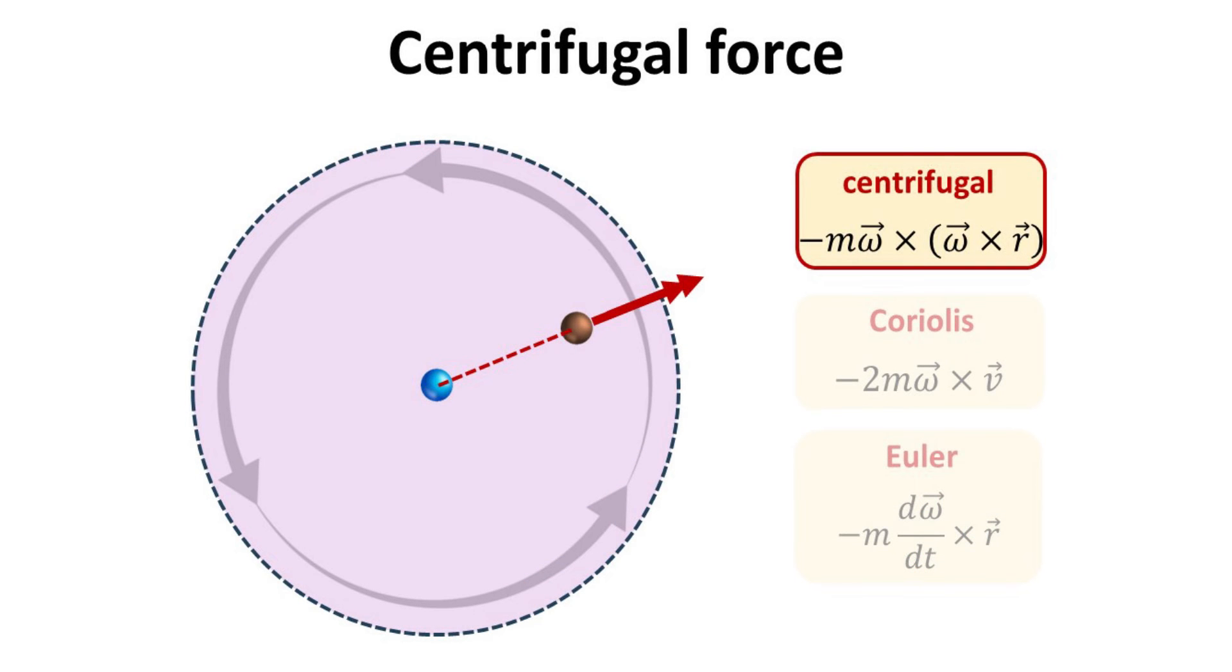First, let's inspect the centrifugal force, which is proportional to omega cross omega cross r. For the red point mass, the displacement vector r is as shown. Since omega is pointing out of the page, omega cross r should then point upwards as shown. The centrifugal force given by omega cross omega cross r would thus point outwards away from the center, in a manner directly opposite to the centripetal force in the inertia frame.